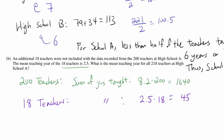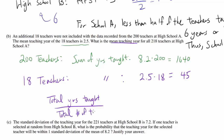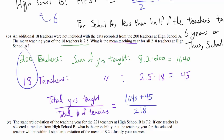We can now find the mean teaching year for all 218 teachers. The mean is the total years taught divided by the total number of teachers. Total years taught is 1640 plus 45, and the total number of teachers is 218. When you evaluate this, you should get 7.729 years.